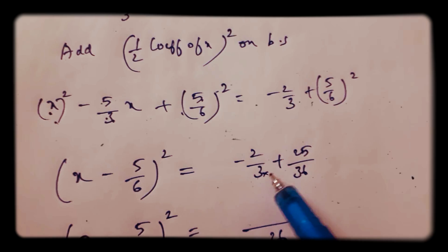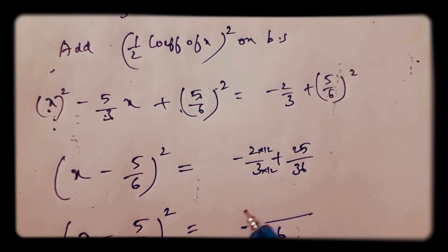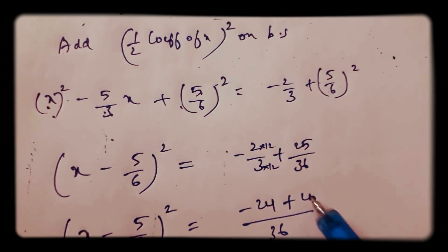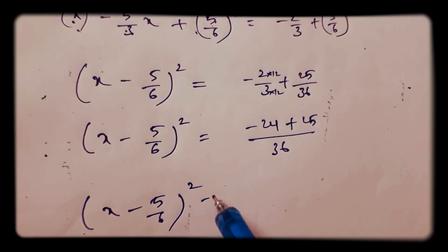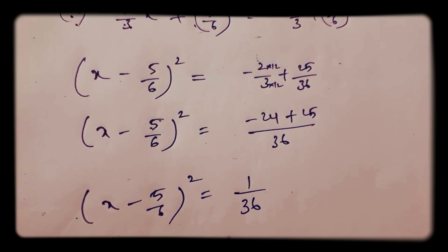LCM is 36. So here into 12. So minus 24 plus 25. Here x minus 5 by 6 whole square. 1 by 36.